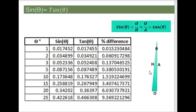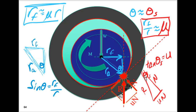The relationship is opposite over hypotenuse versus opposite over adjacent. For a really skinny triangle — especially at small angles — the adjacent side and hypotenuse are practically the same, so sine theta is approximately equal to tangent theta. Looking at a table, all the way up to about 25 degrees it's very close. So when we compare the friction angle to the angle defining the friction radius, these two are very similar to one another.